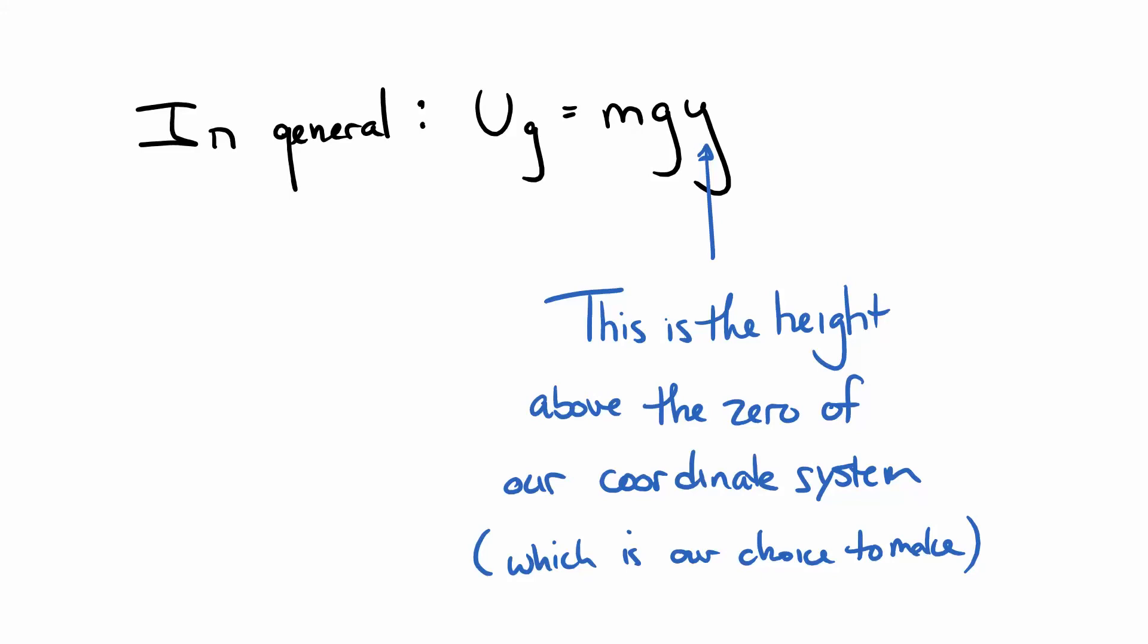I've lifted it a distance h, and so the work that I did is mgh. And we just said the work that I did is equal to the final gravitational potential energy. So in general, we're going to say that the gravitational potential energy is mgy. Y is the height of the object above some zero in the coordinate system. So usually that's going to be the lowest point in the system.